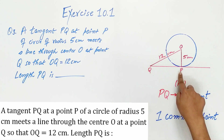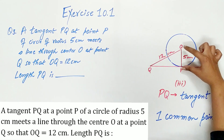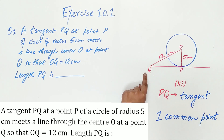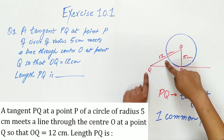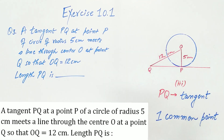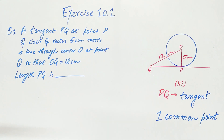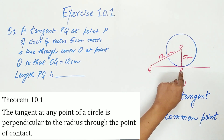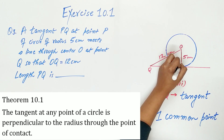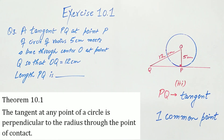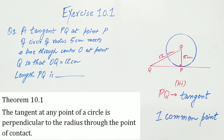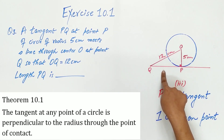Question 3: a tangent PQ at point P of a circle of radius 5 cm meets a line through center O at point Q so that OQ is 12 cm. We have to find the length of PQ. By Theorem 10.1, the tangent is perpendicular to the radius of the circle, so we can use the Pythagorean theorem since triangle OQP is right-angled. We know the hypotenuse and the perpendicular, and just need to find the base.